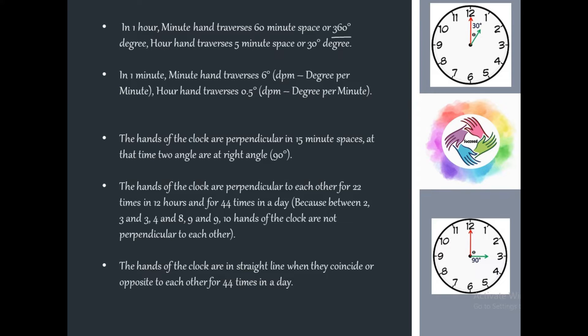In 1 minute, the minute hand traverses 1 minute space, so the long hand moves 6 degrees per minute and the short hand moves 0.5 degrees per minute. The hands of the clock are perpendicular when they are 15 minute spaces apart, forming a right angle of 90 degrees — for example, when the minute hand is at 12 and the hour hand is at 3.